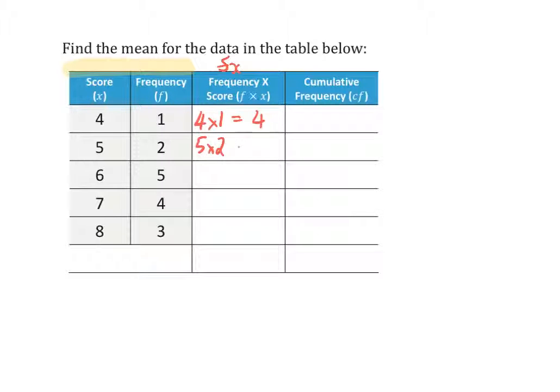5 times 2 equals 10. 6 times 5 equals 30. 7 times 4 equals 28. 8 times 3 equals 24. Now once I have gone through and calculated what the frequency times the score is, I need to add up all of my total numbers and put a total down below. So total equals 96.